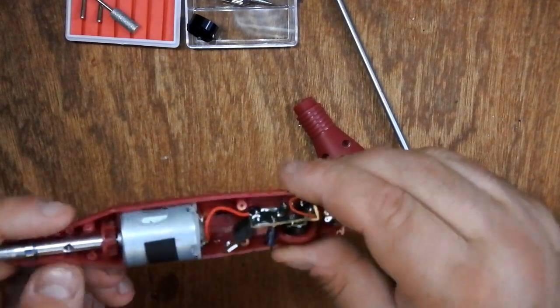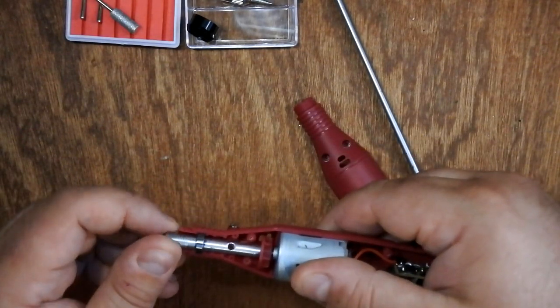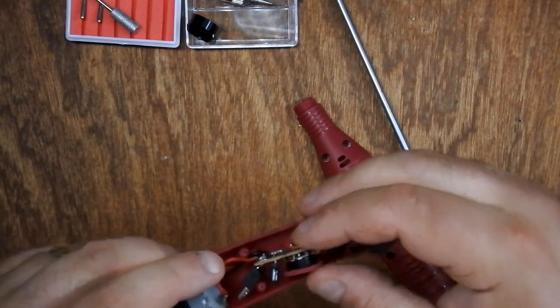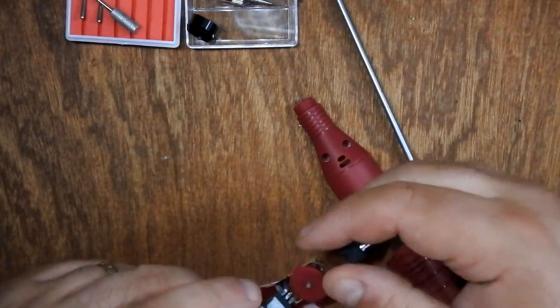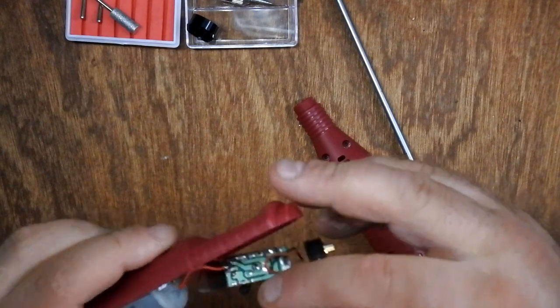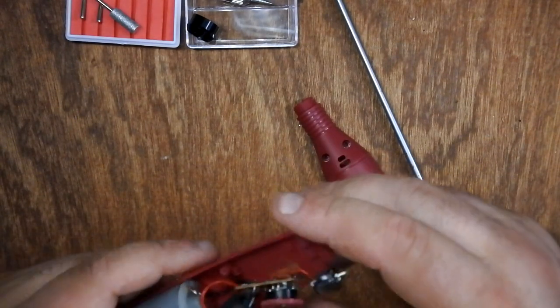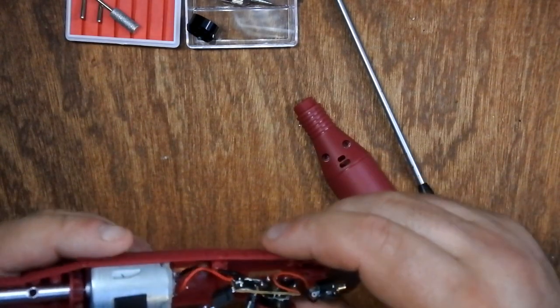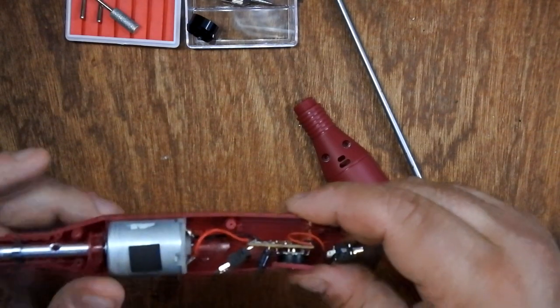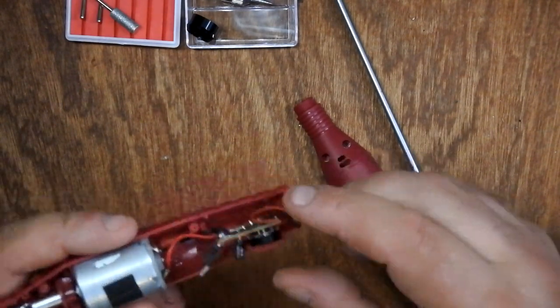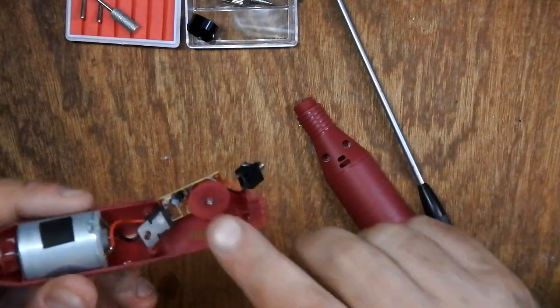So, we have a standard DC motor. Fairly hefty shaft. Unusual circuit board. MOSFET, what's that for? Possibly for amplifier, I get it, yes.